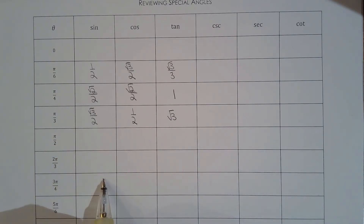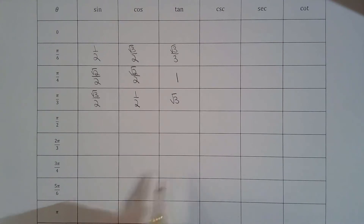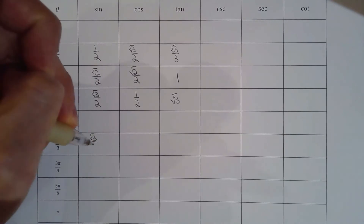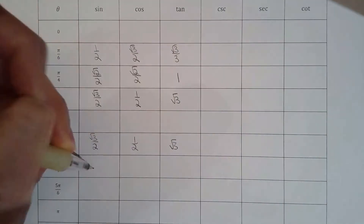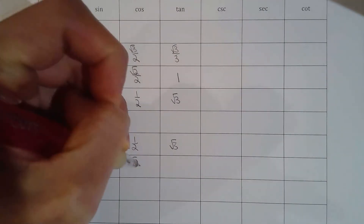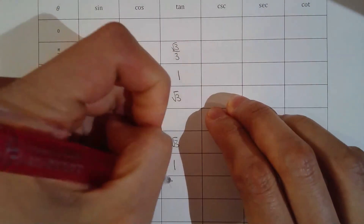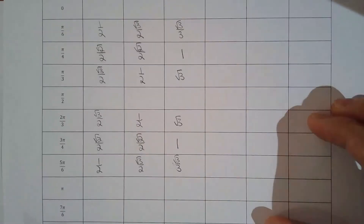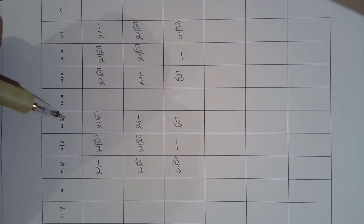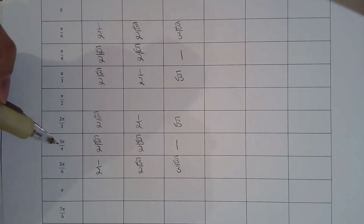For 3π/4 I'm going to refer to π/4, and for 5π/6 I'm going to refer to π/6. The values are 1/2, root 3 over 2, and root 3 over 3. But it's not going to be exactly the same, because these three angles — 2π/3, 3π/4, and 5π/6 — are in the second quadrant, and in the second quadrant cosine and tan are negative.